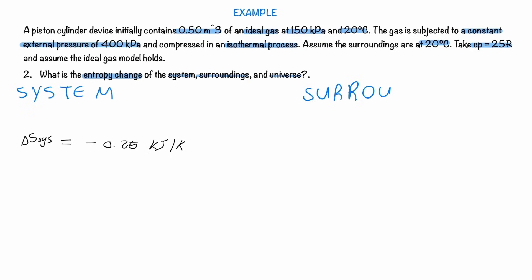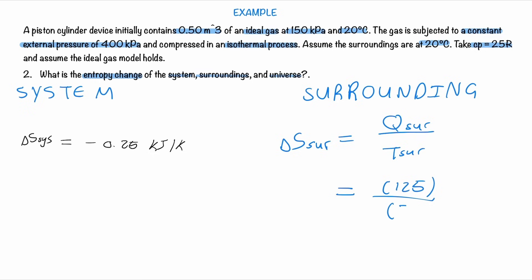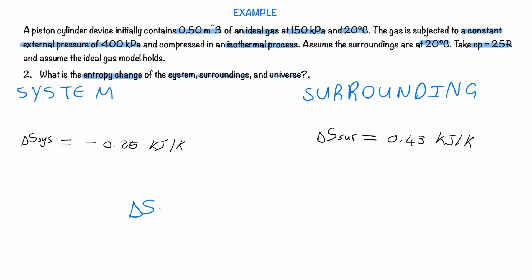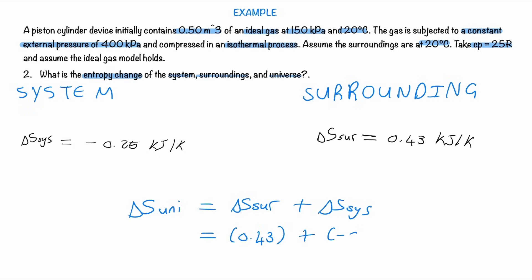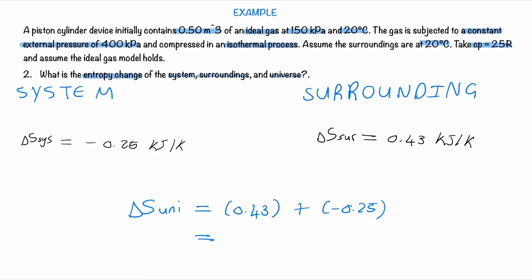For the entropy change of the surroundings, we use the heat and temperature formula at constant temperature. Plugging in our values gives an entropy change of the surroundings of +0.43 kJ/K. The entropy change of the universe is then the sum of the system and surroundings entropy changes, giving 0.18 kJ/K.